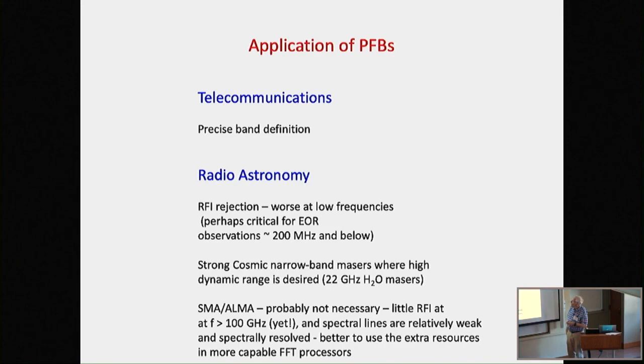Radio astronomy, it's a little bit different. The principal use is probably for RFI rejection, which is most severe at low frequencies. For example, the EOR experiments are down at 200 megahertz. They're also useful for maybe when you have cosmic masers, which can have tremendous brightness temperatures. And you might have a spectrum with features in there that vary in intensity by a factor of 10 to the fifth sensitivity. So you don't want the strong features spilling over and wiping out the weak features. So that's another useful case. I should point out that in millimeter interferometers, such as the SMA and ALMA, polyphase filter banks are probably not necessary. There's little RFI at frequencies above 100 gigahertz. And the spectral lines are relatively weak and spectrally resolved. So it's better to put your money into just the basic FFT processor with more capability.